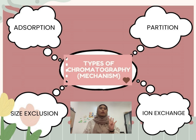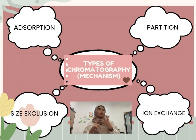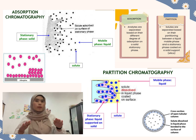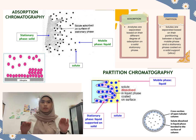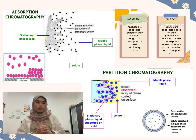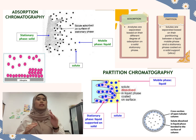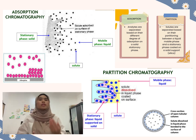There are four types of chromatography. The first one is adsorption, the second is partition, the third is size exclusion, and the fourth is ion exchange. For adsorption, analytes are separated based on the different degree of adsorption on a solid stationary phase. For partition, solutes are separated based on their partitioning between a liquid mobile phase and a stationary phase coated on a solid support, which is silica.